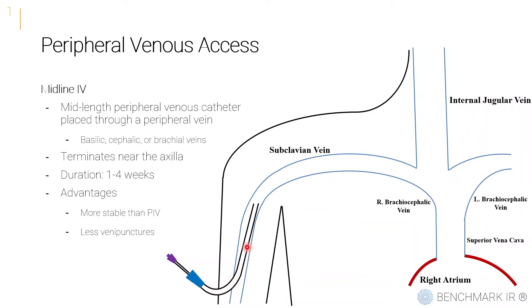The midline typically terminates around near the axilla. It's a little bit longer than a peripheral IV, really just to help with stability, and it's not going to terminate in a central vein — that by definition would be a central venous catheter. Midlines can be used for at least five days and actually up to a month. The advantage is they don't need to be replaced as frequently, meaning fewer needle sticks for the patient. If a patient has difficult veins and you're worried about losing access, sometimes you'll place a midline just to ensure you don't lose that access in case things get critical and you need to give medications or fluids in an emergent situation.